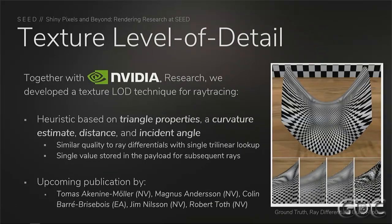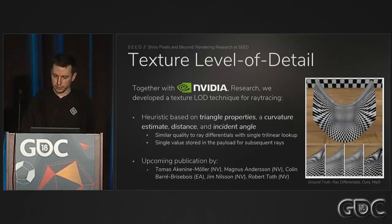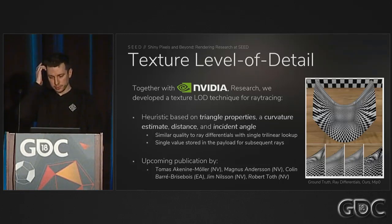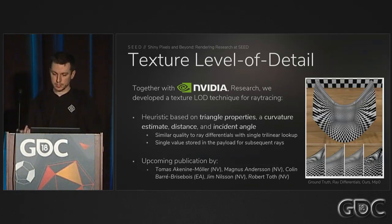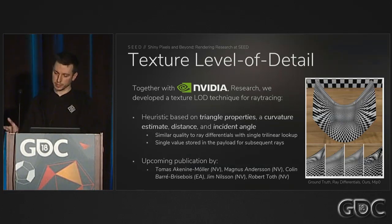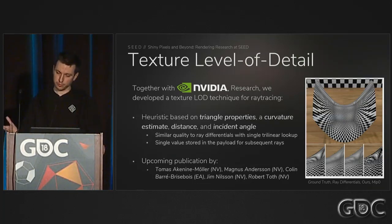Together with Aaron's team and Thomas Akenine-Möller at the group in Sweden, we developed a texture technique for real-time ray tracing. Briefly, the heuristic is based on triangle properties — the curvature estimate, distance, and the incident angle. What's really cool is that we get similar quality to ray differentials, and we only store a single value in the payload for subsequent rays. We don't have enough time today to cover this fully, but I expect an upcoming publication on this topic.